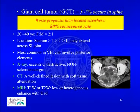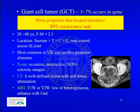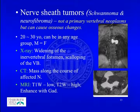Giant cell tumor has only a 3 to 7% chance of occurring in the spine; however, when it does, it carries a worse prognosis with an 80% recurrence rate. It typically occurs in patients aged 20 to 40 with female predominance, most commonly in the sacrum followed by thoracic, cervical, and lumbar spine, and mainly in the vertebral body. X-ray shows eccentric and destructive non-sclerotic margins, and CT shows a well-defined lesion with soft tissue attenuation.